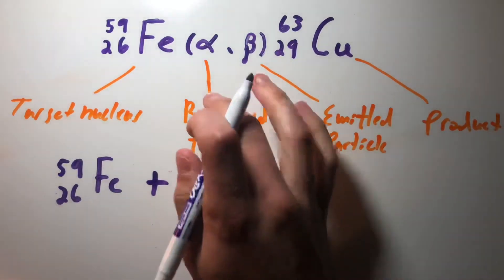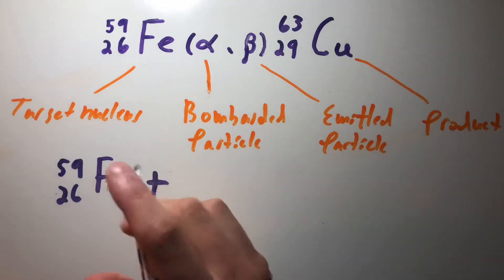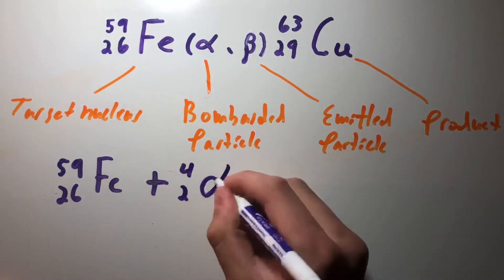Then we have our alpha particle, which is being bombarded. Bombarding is just getting that particle up to a high speed and crashing it into the nucleus of iron. An alpha particle is just helium.